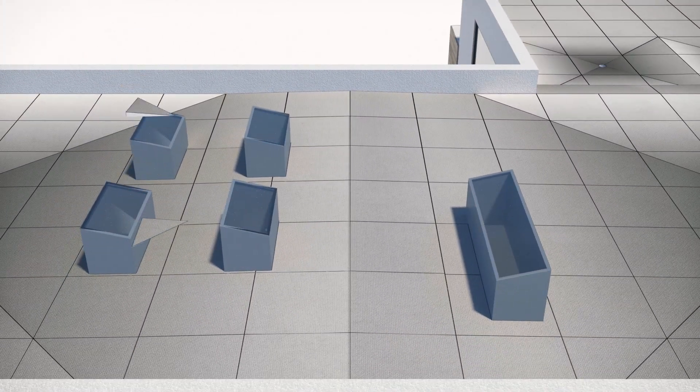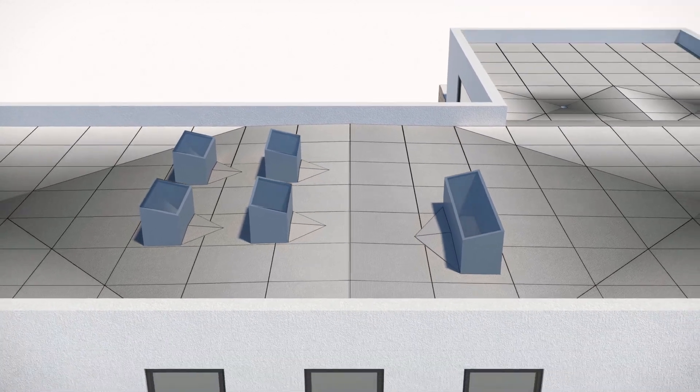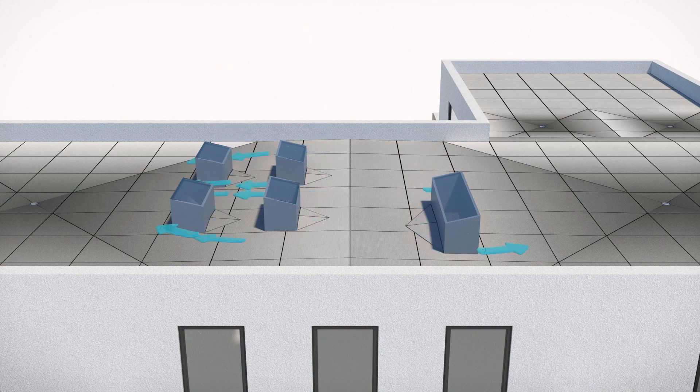The 24 inch tapered edge strip can also be used to field fabricate crickets, which will divert the water around roof obstructions.